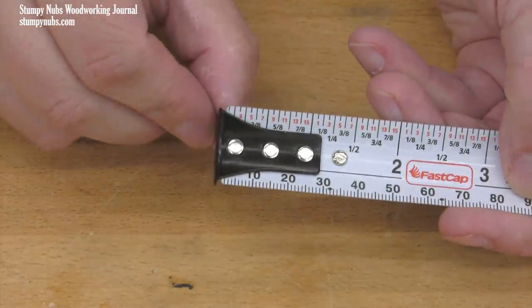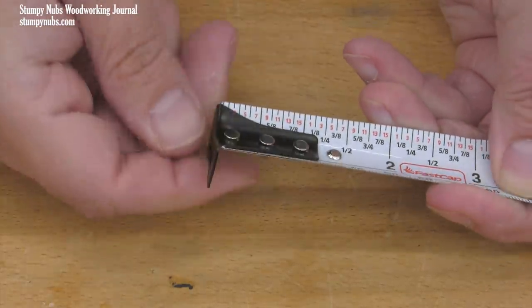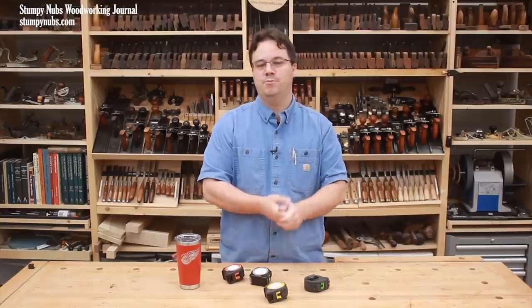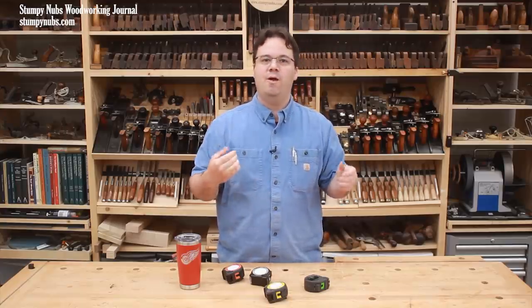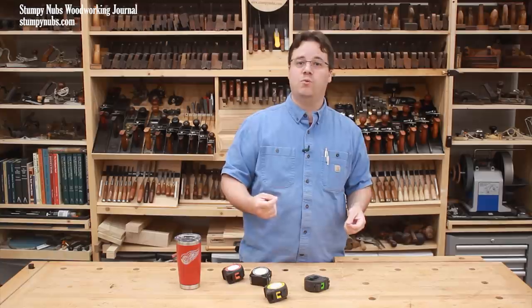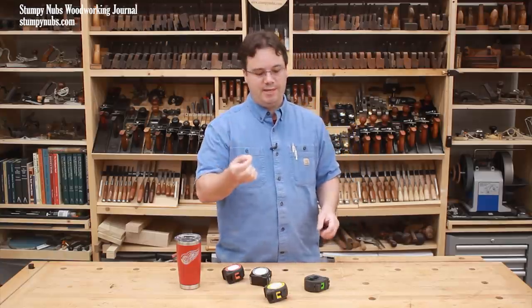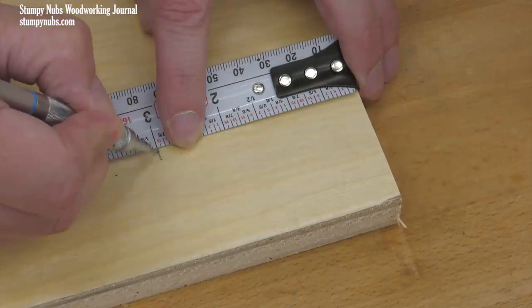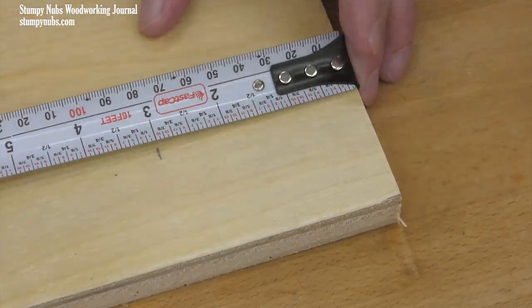By now, most people know that the tab on the end of the tape is supposed to move. This makes it possible to take both inside and outside measurements accurately. But have you ever checked to see if yours moves the right amount, which should be equal to the thickness of the steel tab itself?